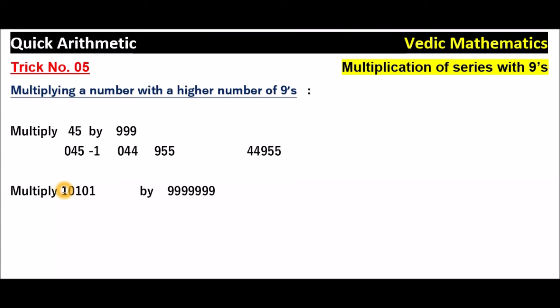Here also, make it 7 digits — already 5 are there, so write 2 more digits. That means put 00 on the left side of this number, giving us 0,010,101. Now subtract 1 from this number.